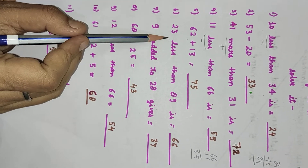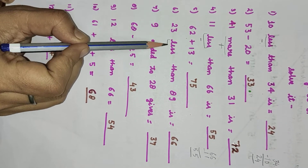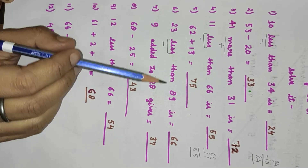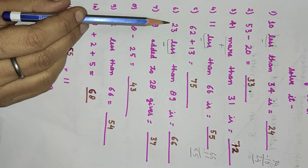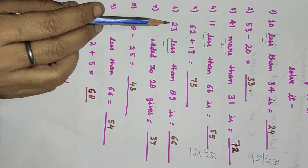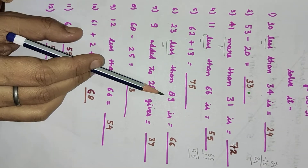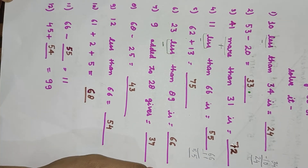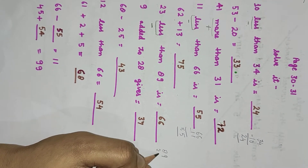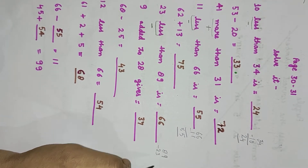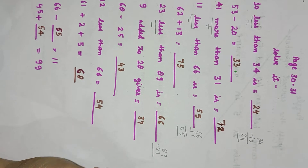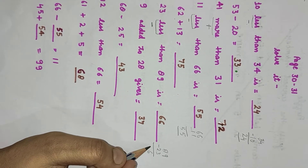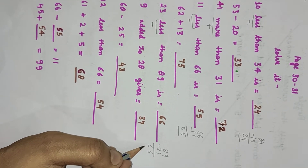23 less than 89 — less than again means minus. We will subtract 23 from 89. 9 minus 3 will be 6, and 8 minus 2 will be 6. So the answer is 66.